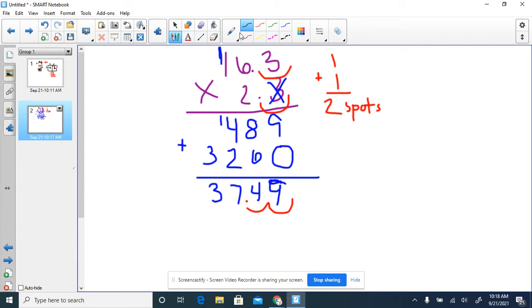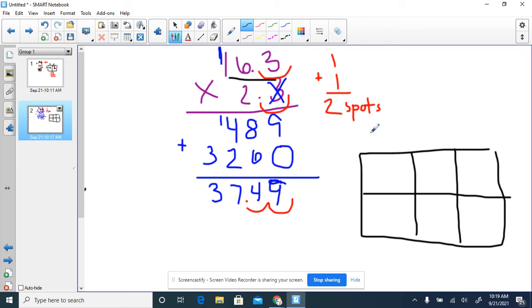If you wanted to do this in the box method, we'll do it right here. You're going to break it down into your different numbers. So our first number is 16.3. So we're going to have a 10, we're going to have a 6, we're going to have 0.3. Over here, we're going to have a 2 and we're going to have a 0.3.